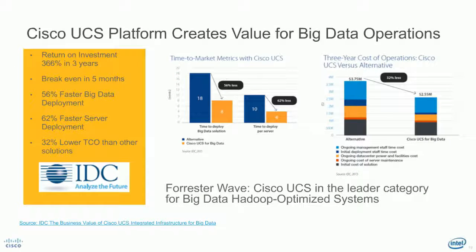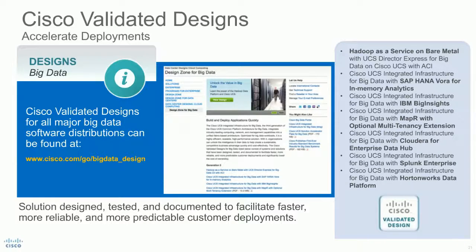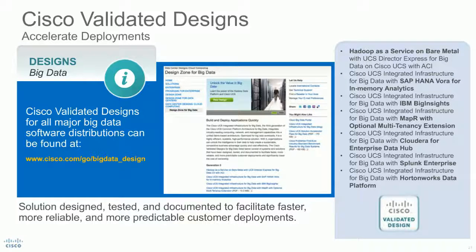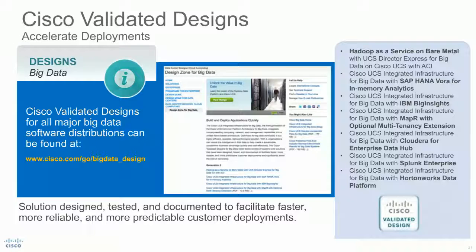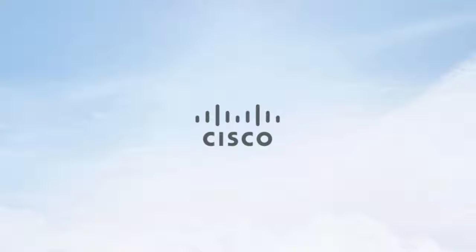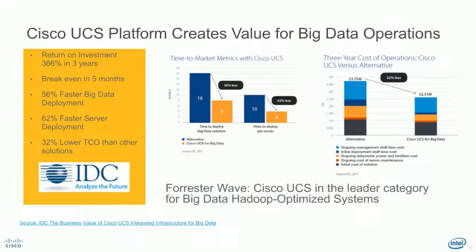We work with our partners to build validated designs. And for customers who want to avoid going through the process of implementing these designs on their own, we have a fully automated solution through UCS Director Express for Big Data. Through a single click, once they have racked and stacked the servers, they can point to a few servers, specify the distribution of Hadoop they want deployed, and it will be deployed in a couple of minutes.